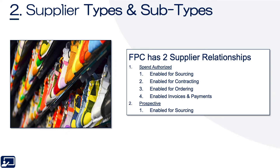Second topic: supplier types and subtypes. FPC — or what we call in slang Fusion Procurement Cloud — has two supplier relationships, broadly what we think of as types: spend authorized and prospective. In short, prospective is like a bidder, whereas spend authorized is usually referred to as wide open, full out. A spend authorized supplier can participate in sourcing just like a prospective, but they can also be enabled for contracting, ordering, invoicing, and paying.